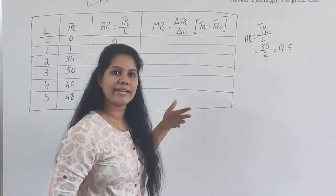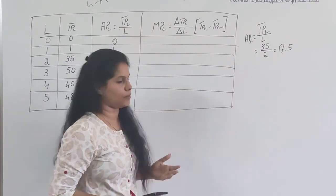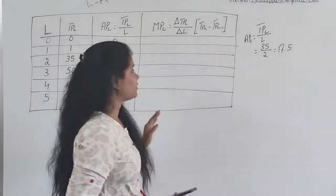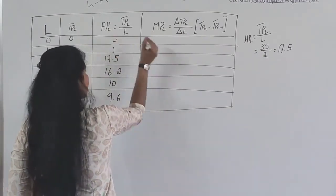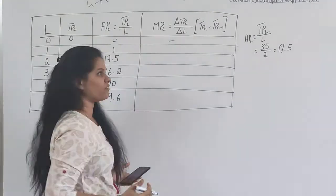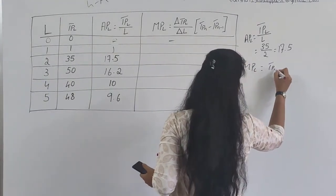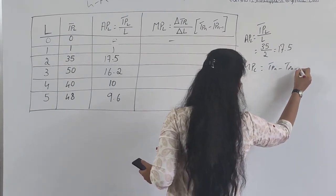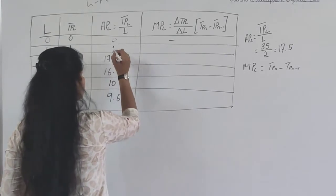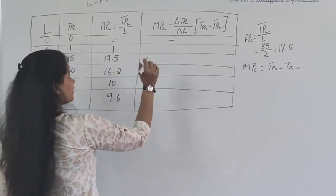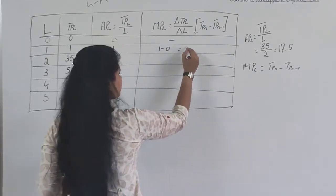No need to spend a lot of time on it. Instead of 0, you do not have anything. I'll go with MPL equals TPn minus TPn minus 1. So let me tell you. You have 1, you don't have anything, so 1 minus 0, the answer is 1.